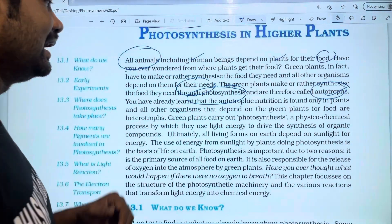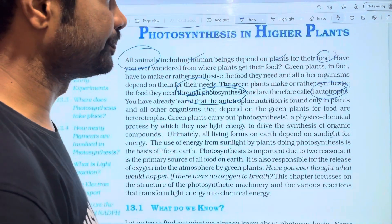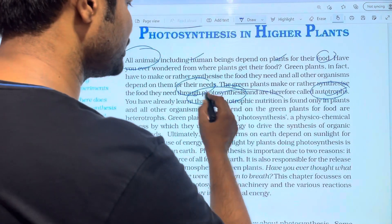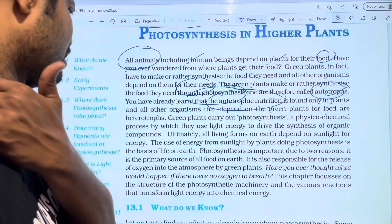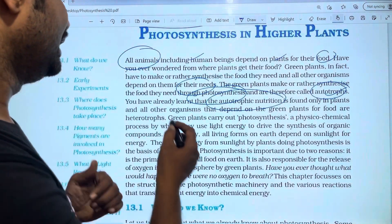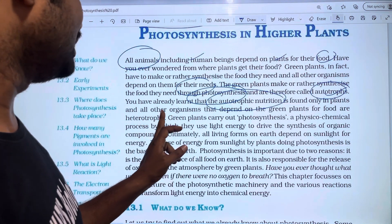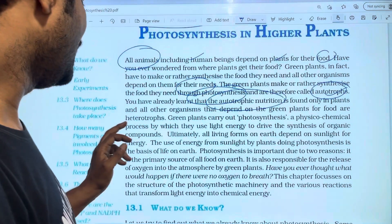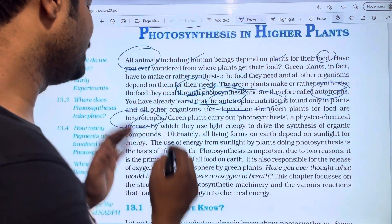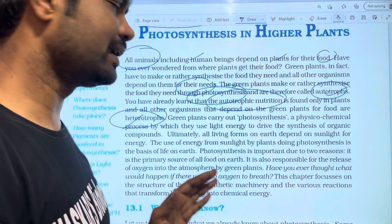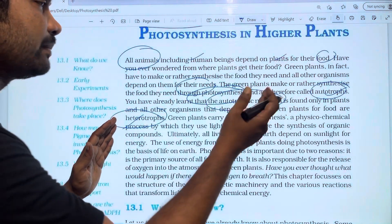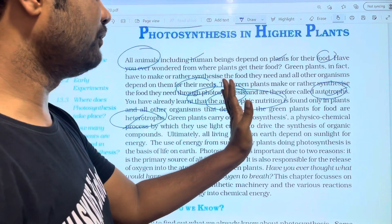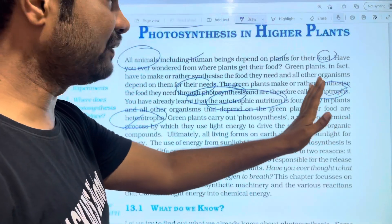You have already learned that autotrophic nutrition is found only in plants. Plants and other organisms that depend on green plants for food are heterotrophs.